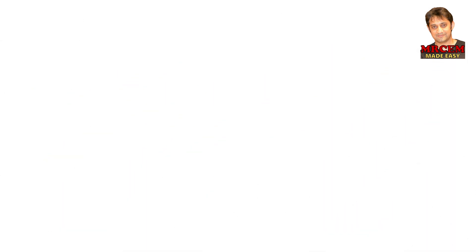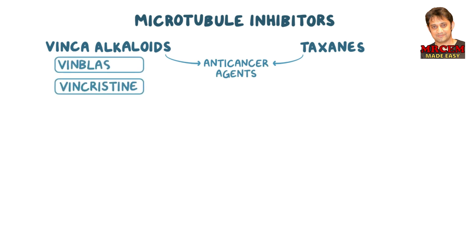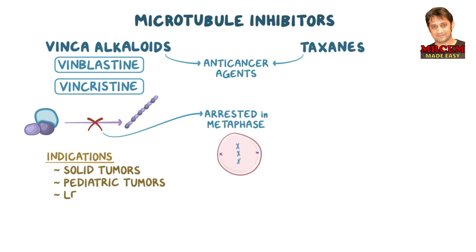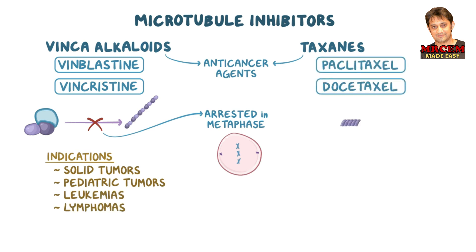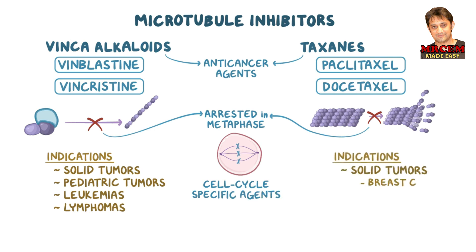As a quick recap: microtubule inhibitors like vinca alkaloids and taxanes are used as anti-cancer agents. Vinca alkaloids include vincristine and vinblastine; they work by binding to beta-tubulin and blocking microtubule formation, causing cells to be arrested in metaphase. They're used for solid tumors, pediatric tumors, leukemias, and lymphomas. Taxanes include paclitaxel and docetaxel, and they work by overstabilizing microtubules and preventing their breakdown during anaphase, also arresting cells in metaphase. Both vinca alkaloids and taxanes are cell-cycle specific agents, and taxanes are used for solid tumors like breast and ovarian cancers.